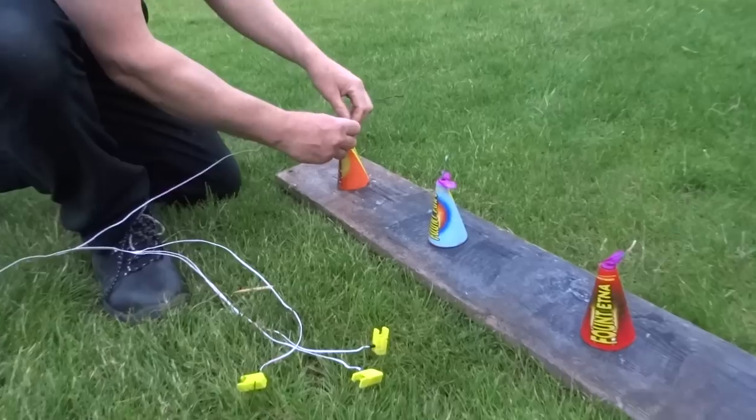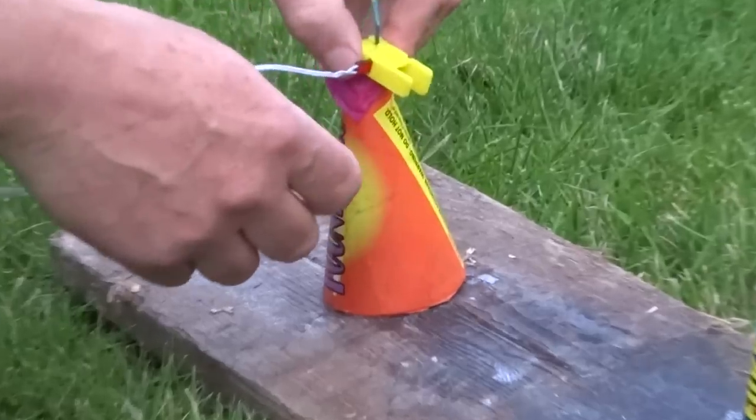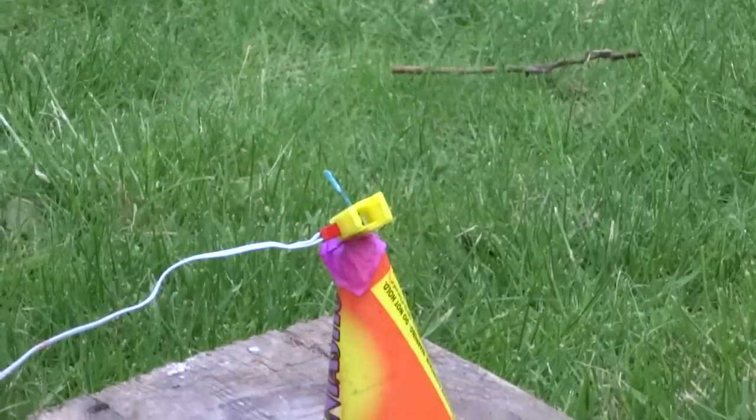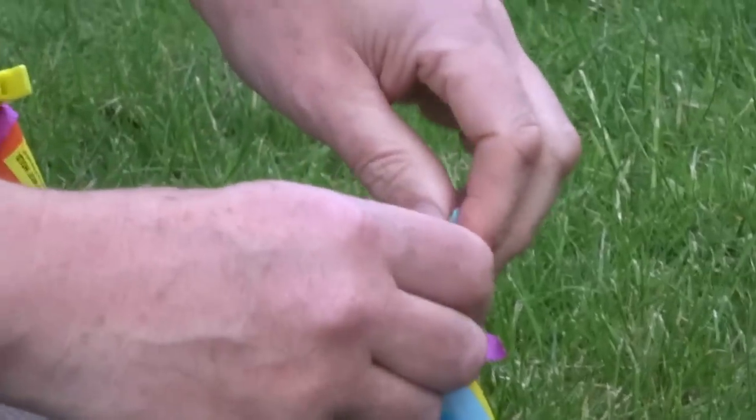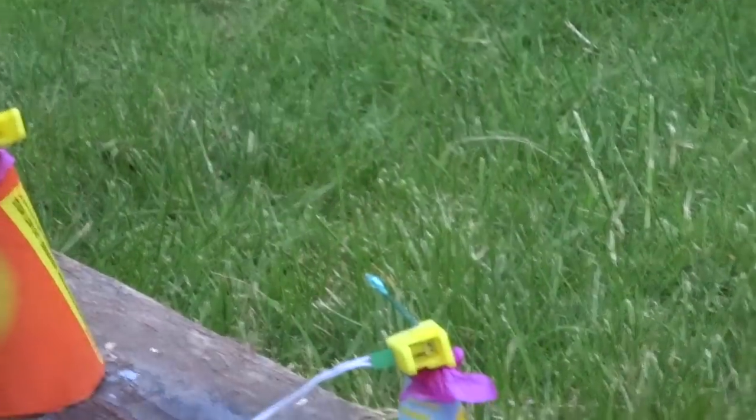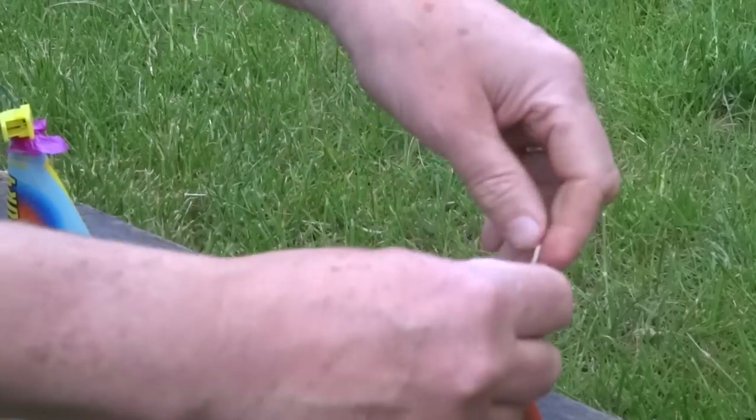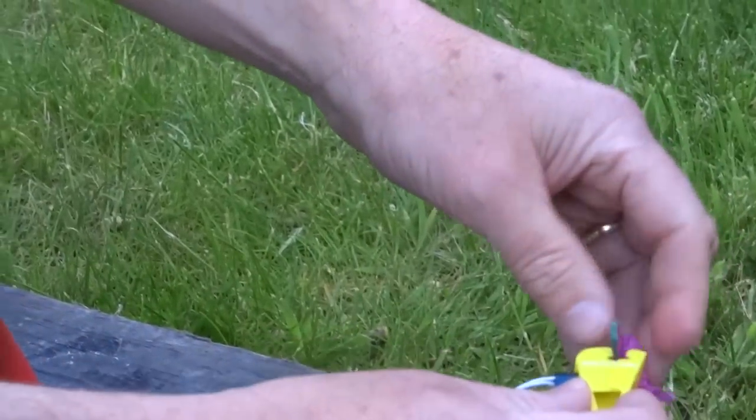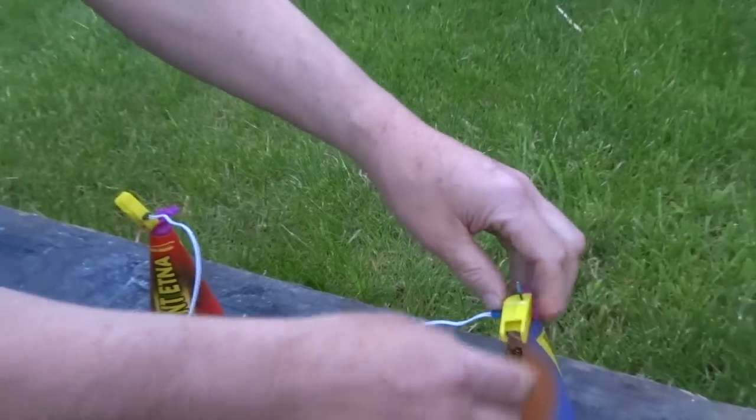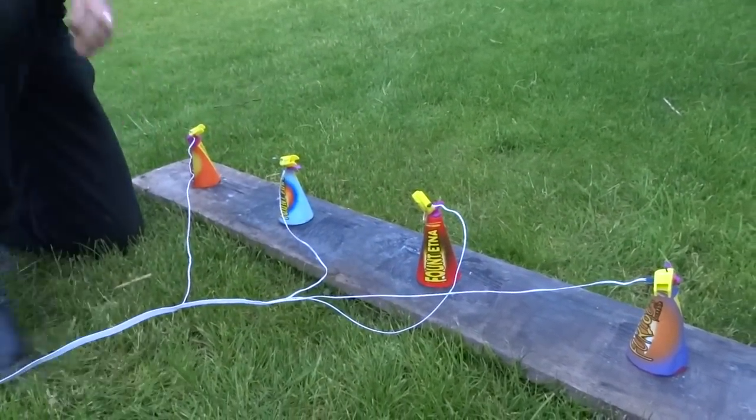Just clip this fuse clip onto the actual fuse itself, just make sure that it's well fixed on there. Second one, third and the fourth clip. They're all fixed nicely onto the fireworks.